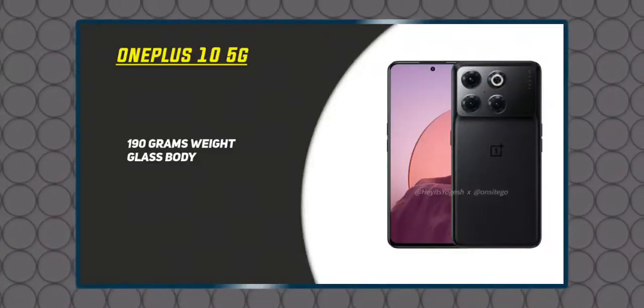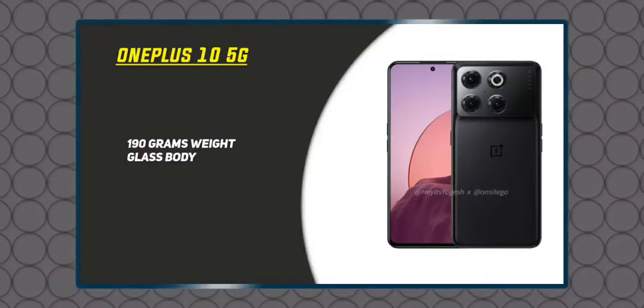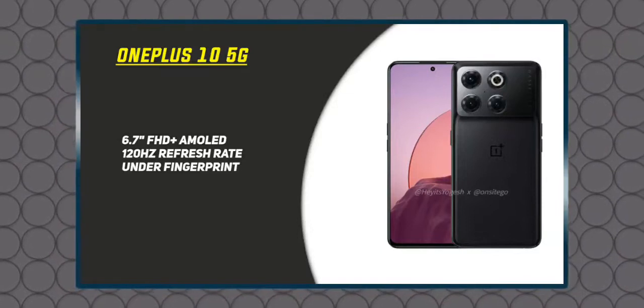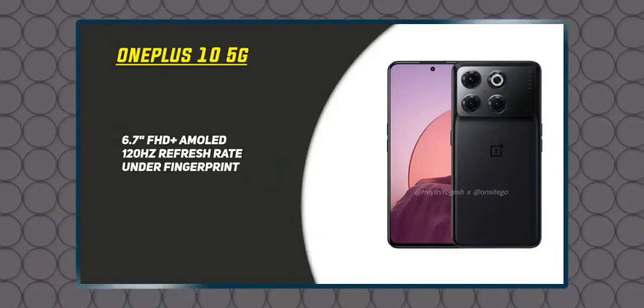In the next video we will try to give more details of the OnePlus 10. There are rumors that the weight of this mobile is 190 grams. I think that's a good amount of weight. It has a 6.7-inch display on the OnePlus 10 series, with an AMOLED full HD display.